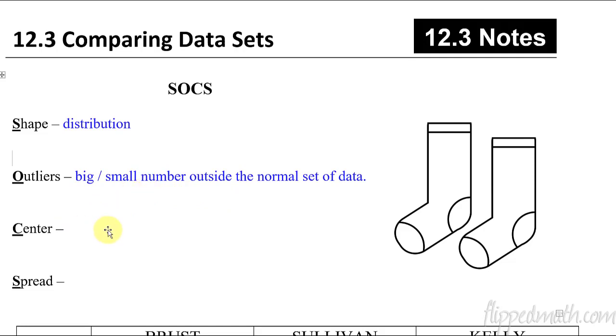Then we have our center, or another way of saying that is central tendency, which is what we talked about in this unit. So it's the mean, the median, and the mode. And then the last thing is the spread, which is just the variability. The two things we looked at for spread were the range and then the mean absolute deviation.